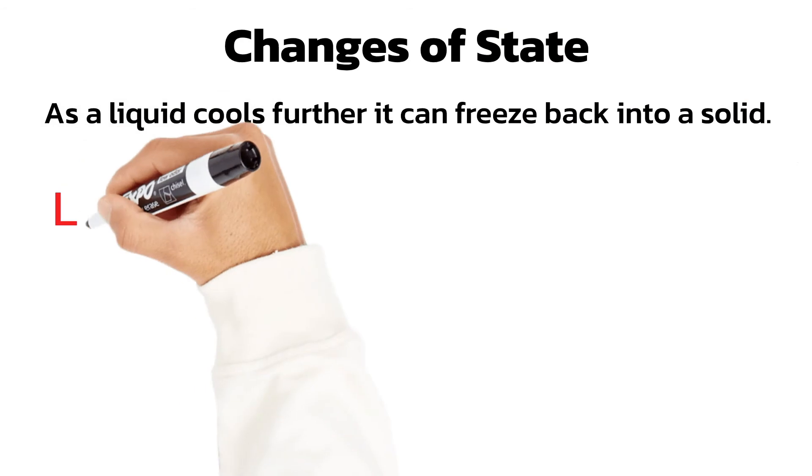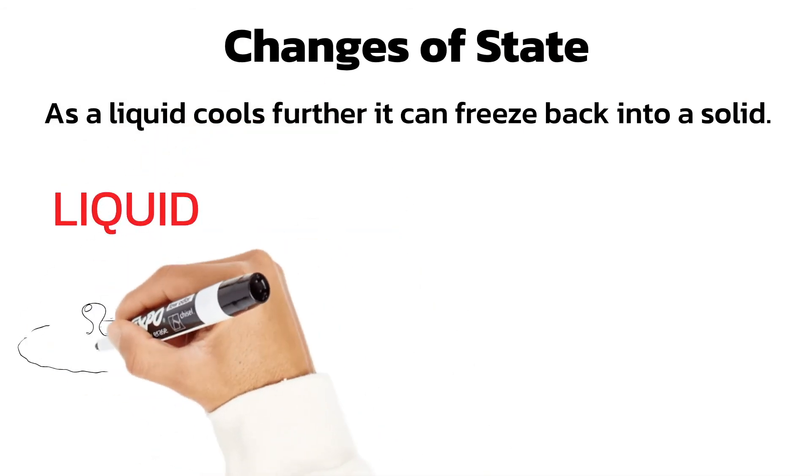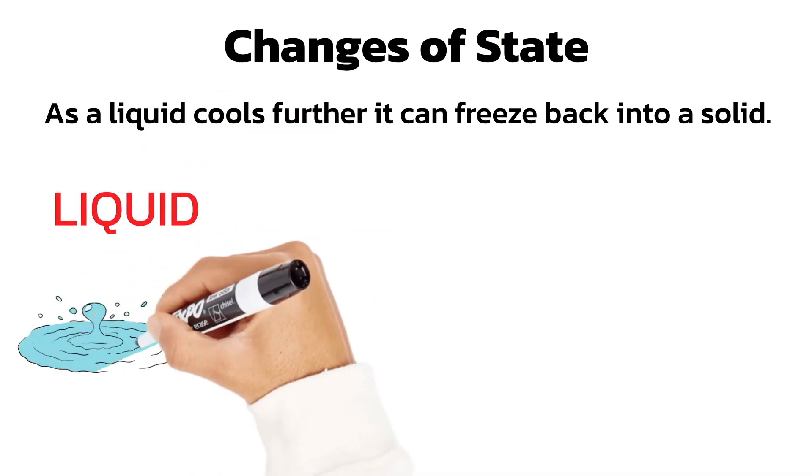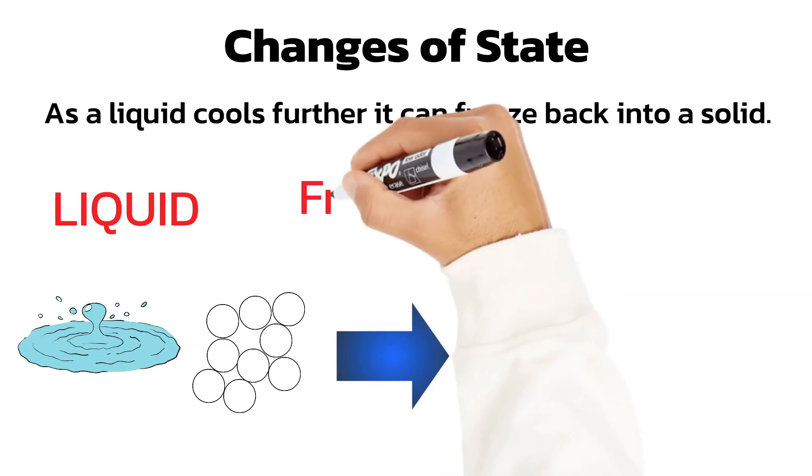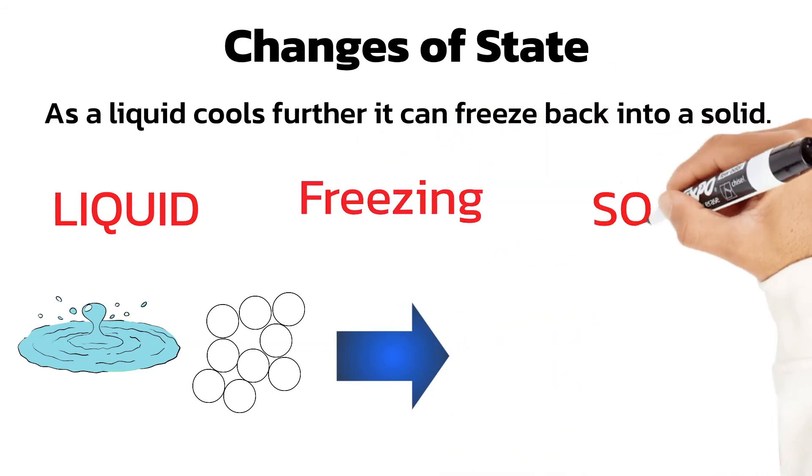As a liquid cools further it can freeze back into a solid. If you put water into a freezer it solidifies and becomes ice. The freezer takes energy away from the water and the particles slow down, which allows the bonds between them to reform, and they move back into a regular arrangement.